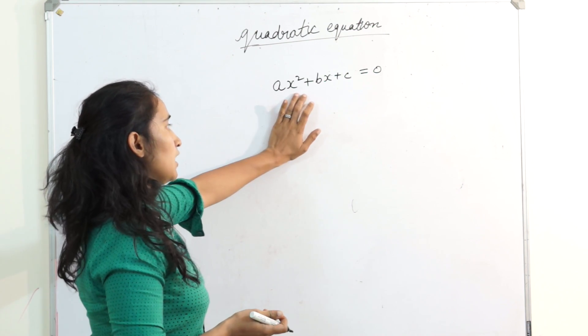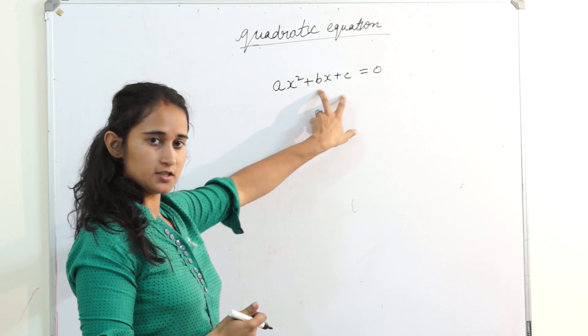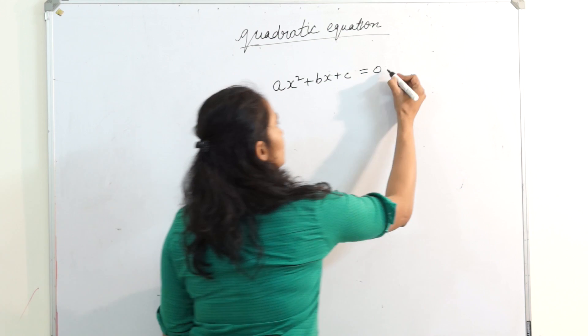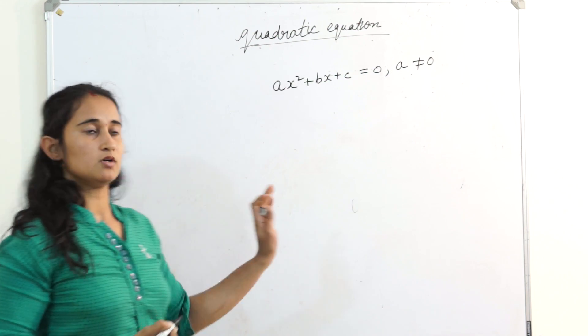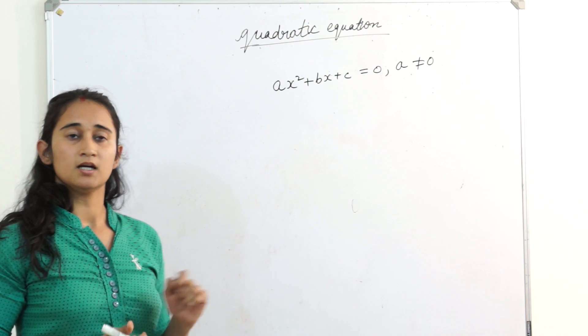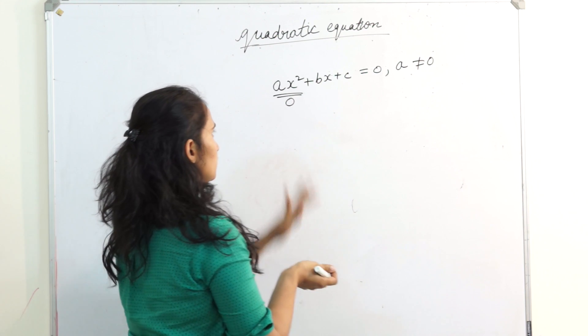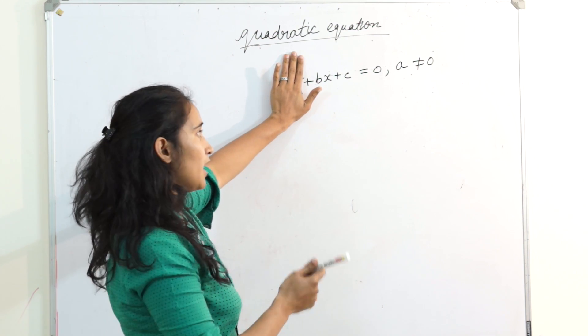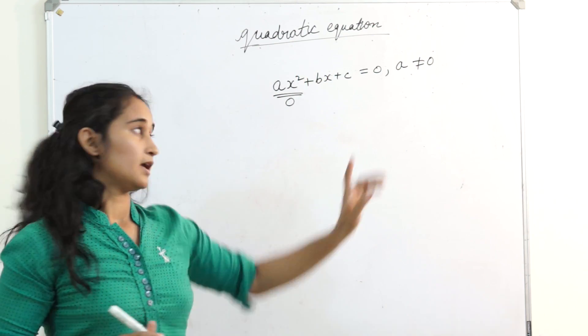See, x highest degree is 2. So ax squared plus bx plus c equals 0. Here a should not be equal to 0. If a is equal to 0, if this term is equal to 0, then is it quadratic equation? No, because then your highest degree is 1. So always remember, a should not be equal to 0 in quadratic equation.